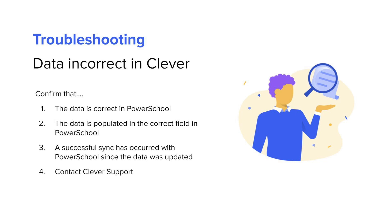Once a record is synced to Clever, it is possible that a specific data point for the record may be incorrect. To resolve the issue, first confirm the data is up to date in PowerSchool in the correct corresponding field. Once confirmed, push another sync with Clever using the Sync Now button on the Sync Settings page in the Clever dashboard. This will ensure a successful sync has occurred since the data was last updated. If this does not resolve the issue, please contact Clever support.